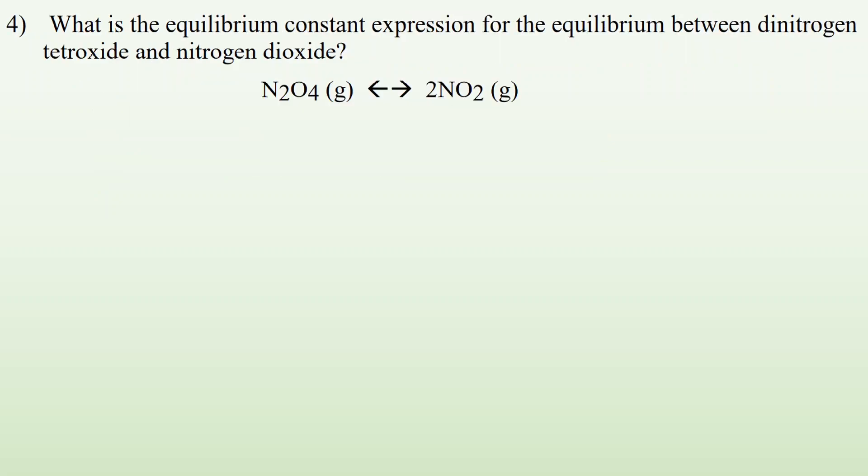Number four, what is the equilibrium constant expression for the equilibrium between dinitrogen tetroxide and nitrogen dioxide? So Keq, let's say it's going to be in terms of pressure because these are both gases, so I can use pressure. Kp equals the pressure of the product, which is NO2, to the power of whatever its coefficient is when it's balanced. So squared, divided by the pressure of the reactants, N2O4. And the coefficient is 1, so I could just leave it as is. So this would be the Kp.